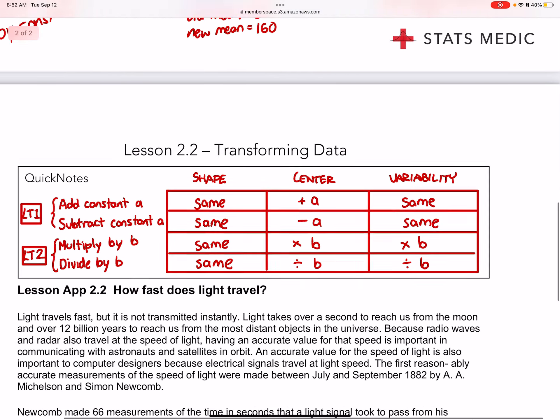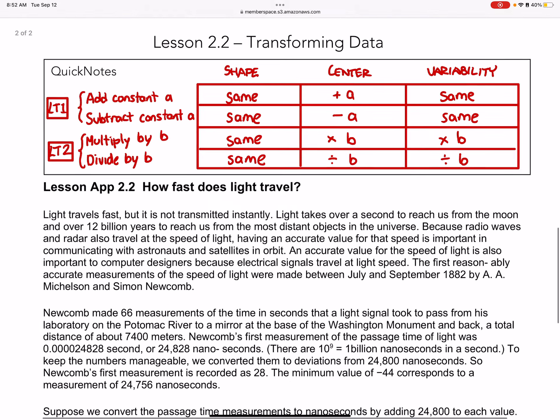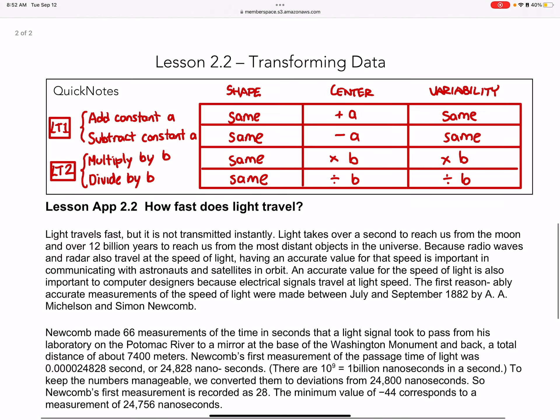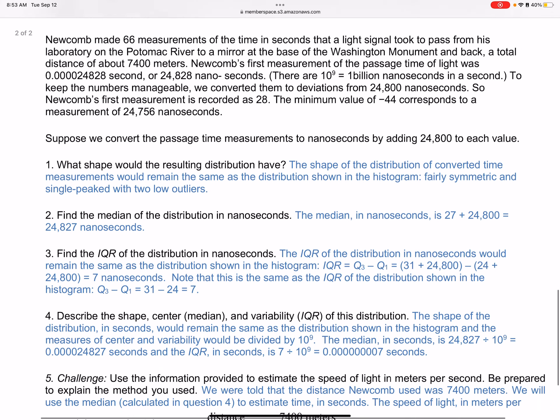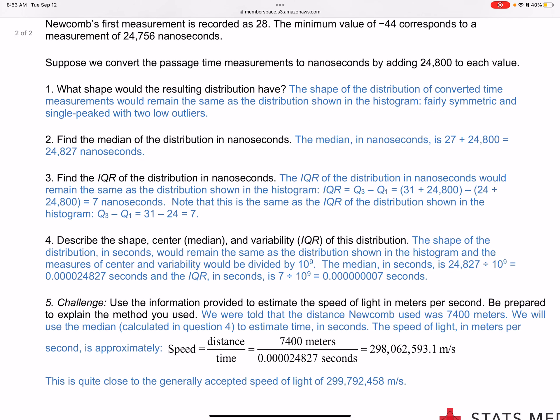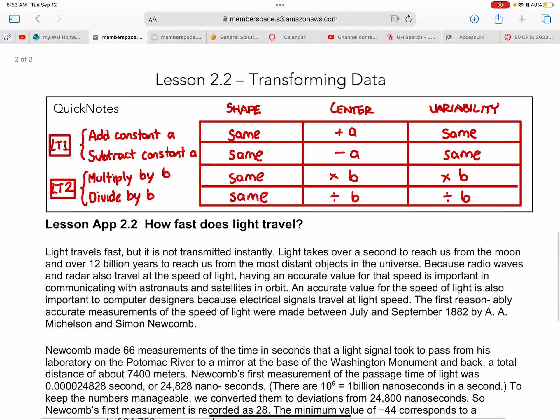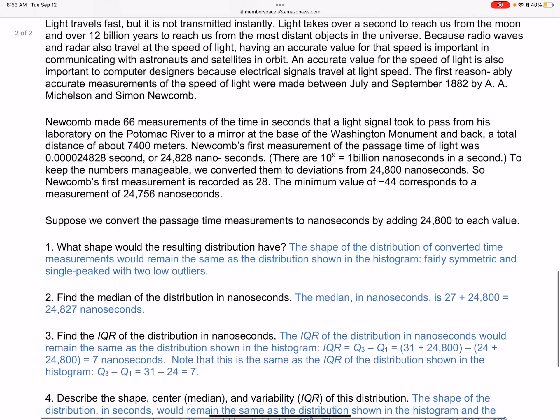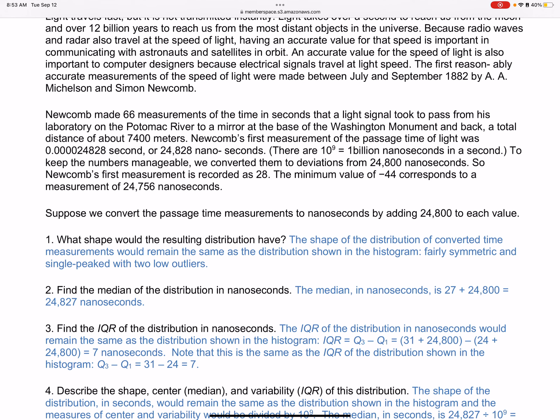I'm going to leave this on here. You can push pause. If you have time, you can go ahead and do this lesson. Suppose we have to convert the passage time to nanoseconds by adding. We're adding, what happens? Everything shifts. What happens when adding? The shape stays the same. Just the center is going to add the amount that I'm moving. I'm moving at 24,800, so that's how much it's going to shift.